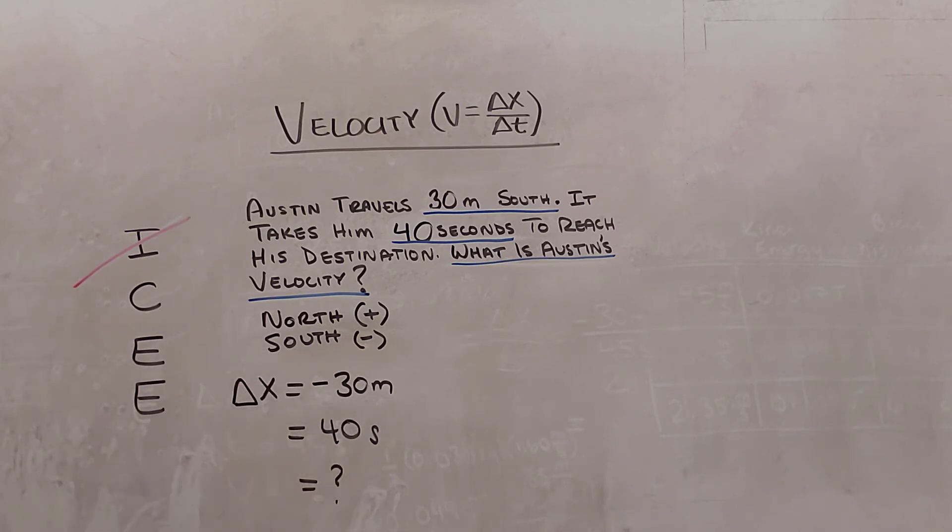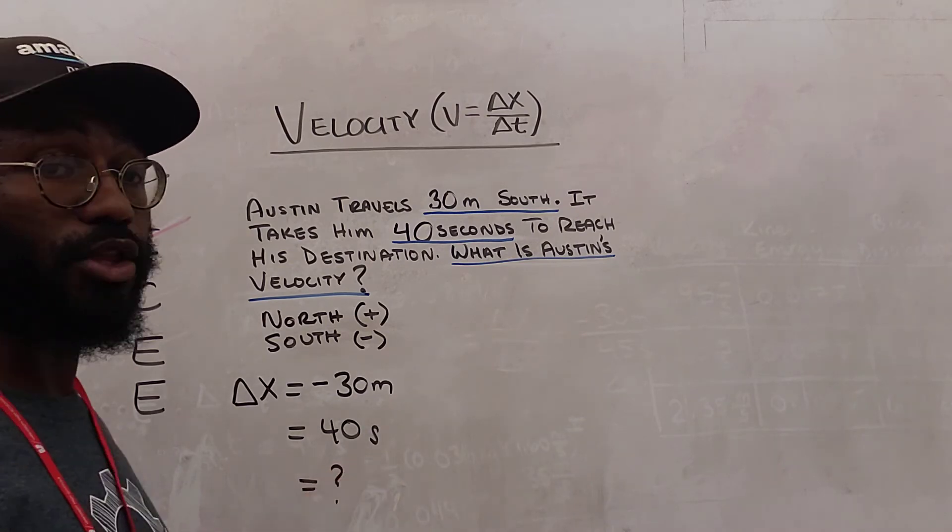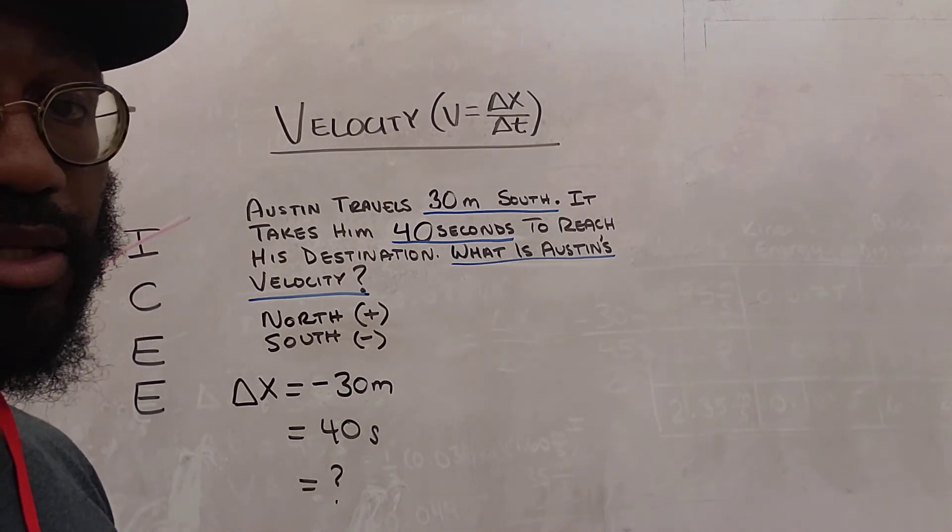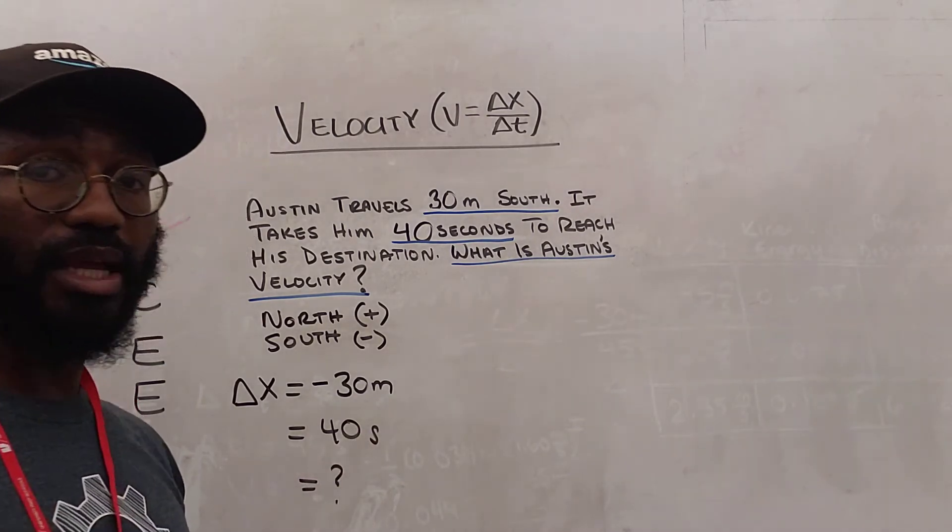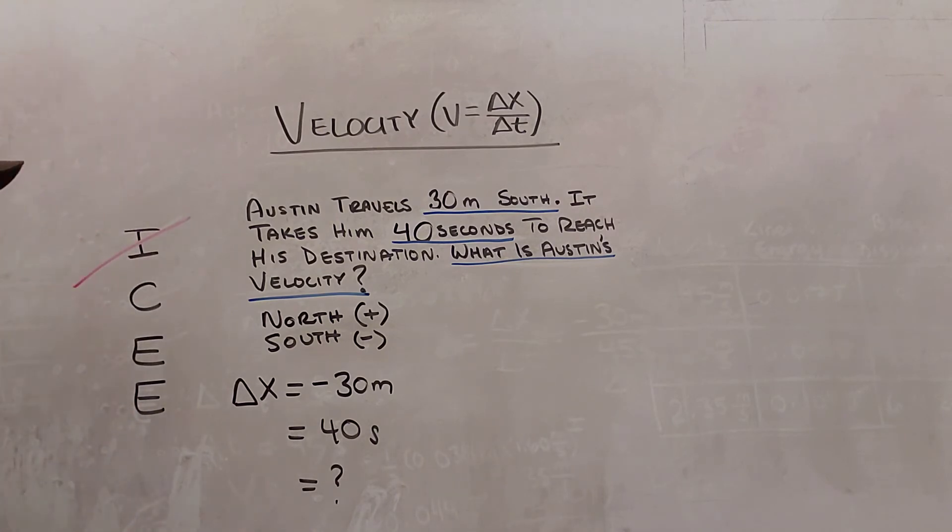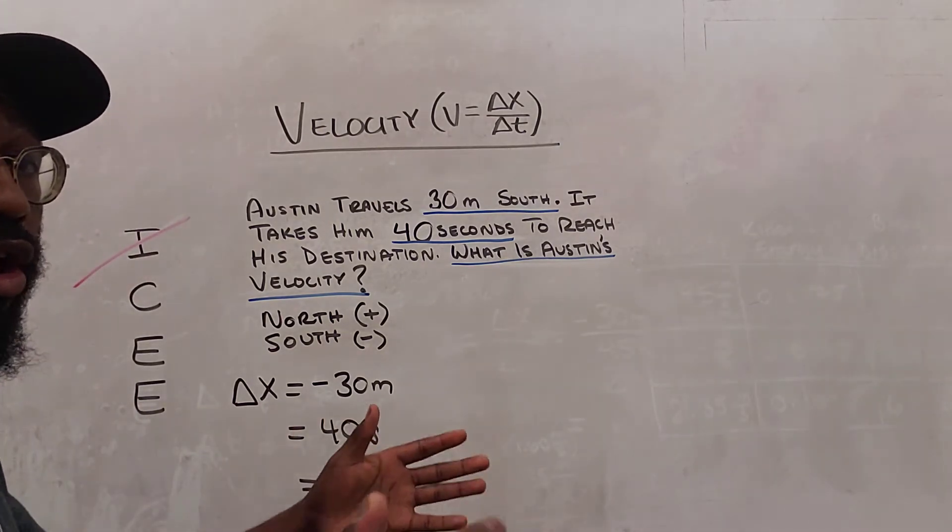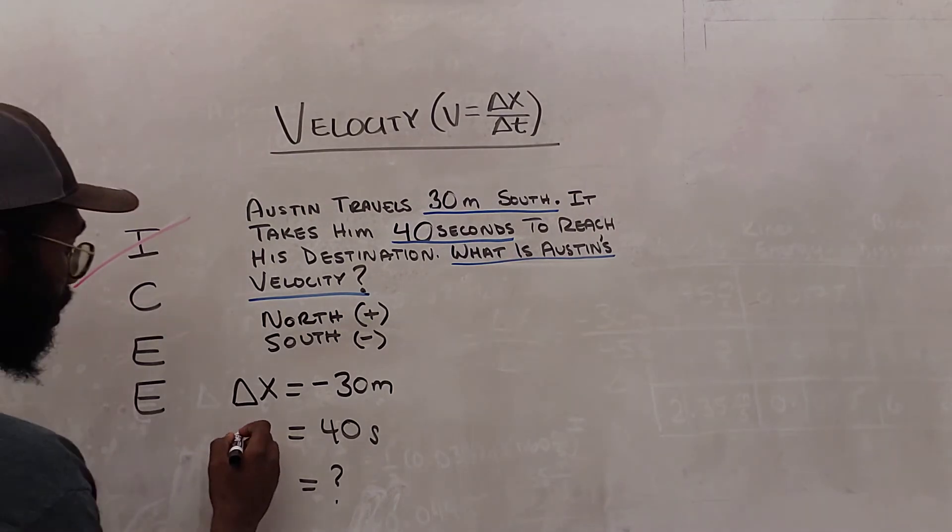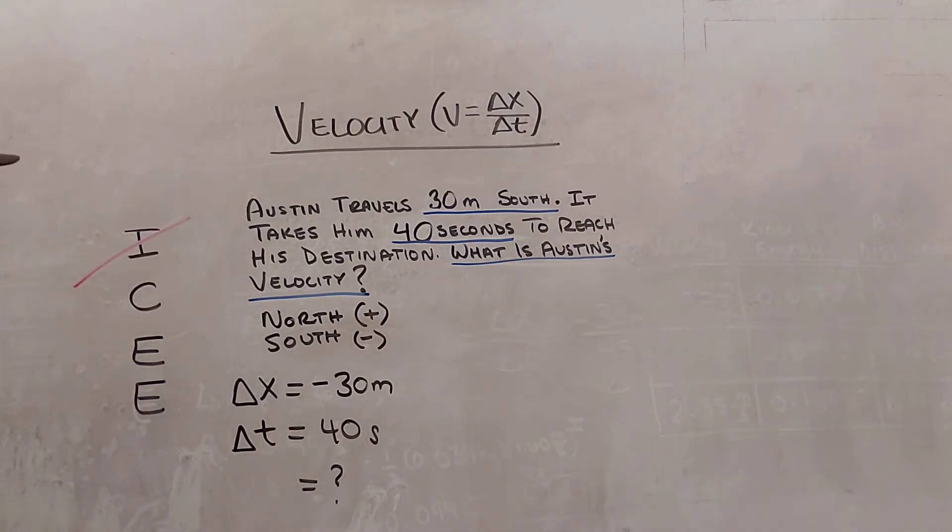Next, we go to 40 seconds. 40 seconds, I'm looking at the unit to categorize this measurement. Seconds is a unit of time, and this is a duration of time, how long it took Austin. And so I'm going to mark this as delta T. Great.